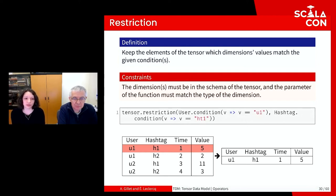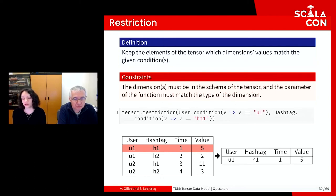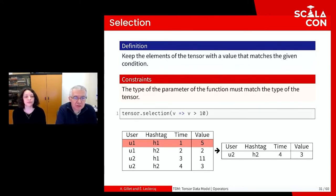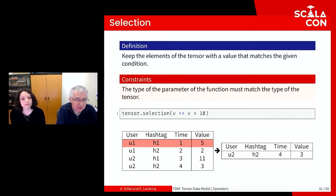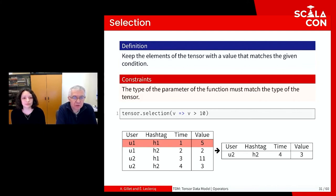Using the same tensor example, if we filter to keep only values where User equals U1 and Hashtag equals H1, it results in a tensor with only one entry. The selection operator also filters entries, but on the tensor values rather than the dimension values. To apply it, we define a parameter function that takes an input of the type of the tensor values and outputs a Boolean. Applying the selection operator to keep only values greater than 10 leaves just one entry.